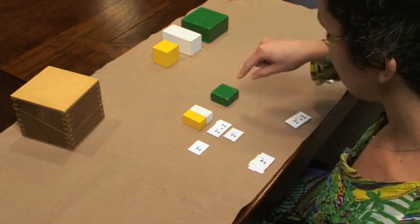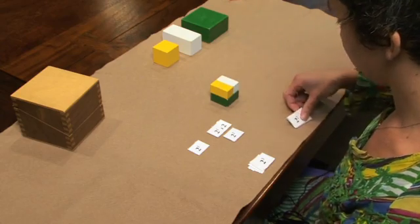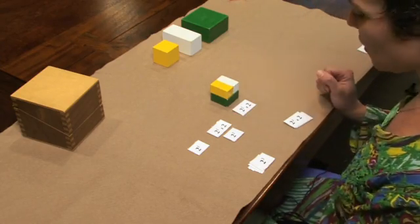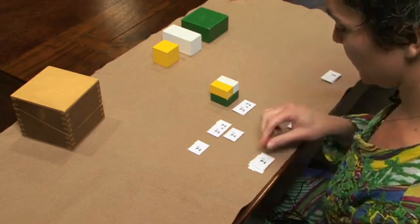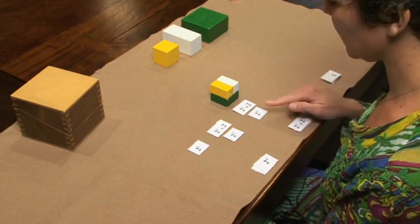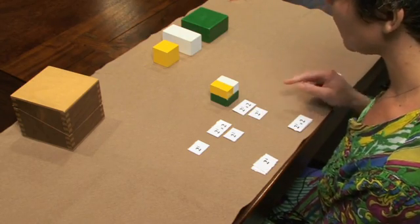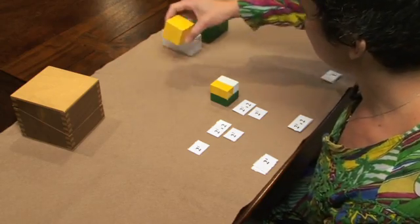If we take two square two times, the students now might recognize this as our two cube and we can label it two cube. We have a cube that is congruent here.